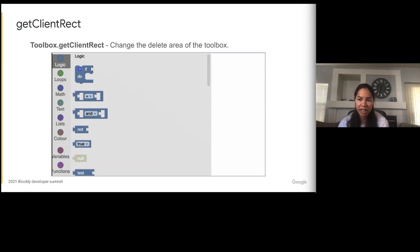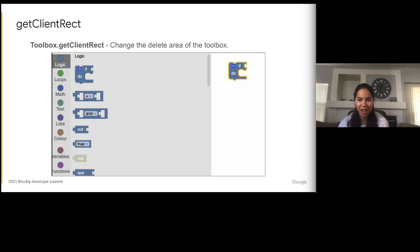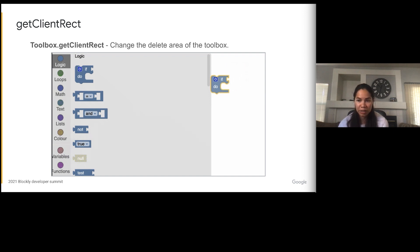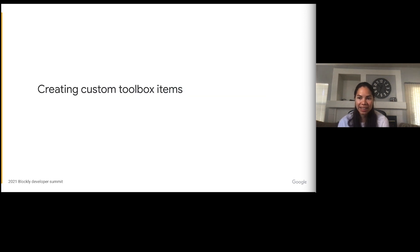The final method we're going to look at is the getClientRect method on the toolbox class. Unlike the previous two methods which were on the toolbox category class, this method is on the toolbox class itself. It calculates the delete area for the toolbox. In the case of the continuous toolbox, we override this method and return the area of the toolbox plus the flyout, so blocks can be deleted when dragged over the flyout as well as the toolbox.